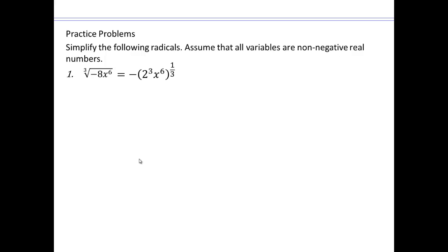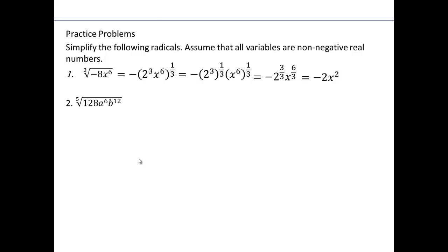Remember, when it's an odd root, the negative can be pulled out. 8 can be written as 2 to the 3rd, x to the 6th. Cube root can be written as to the power one-third. Then raise everything to the power one-third, simplify, and you get those powers. Try that on your own now, same way.